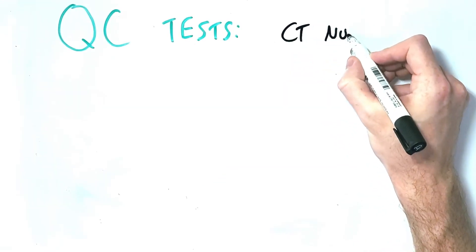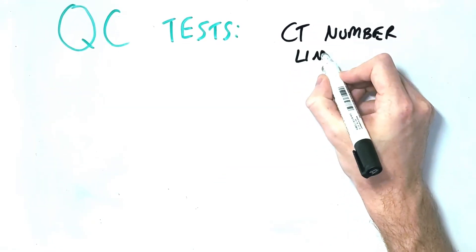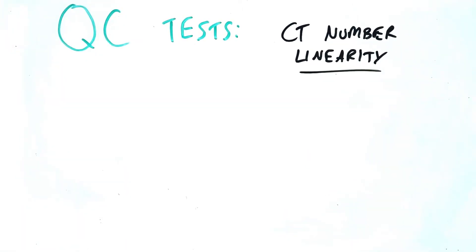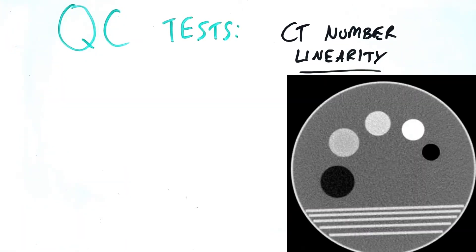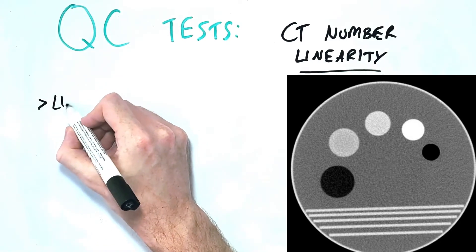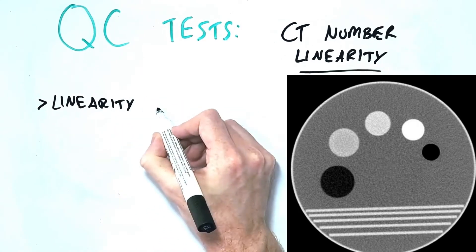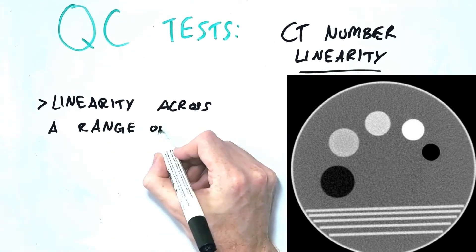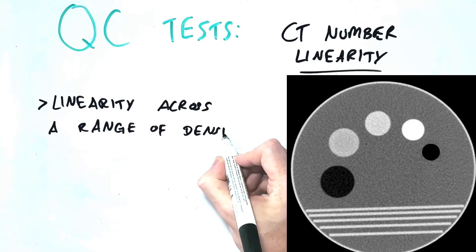CT number linearity refers to the response in measured CT numbers to changes in the type of material or tissue being scanned. A phantom with areas of various density simulating air, fat, water, soft tissue and bone is scanned and then the measured Hounsfield units are assessed and compared to the values they should actually represent based on their known linear attenuation coefficients. This allows us to assess if the scanner is properly detecting changes across a range of densities.